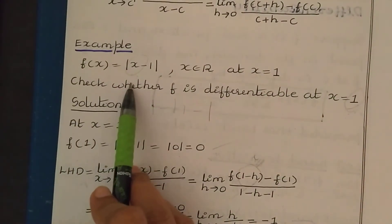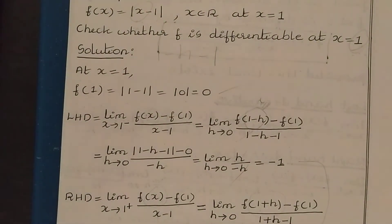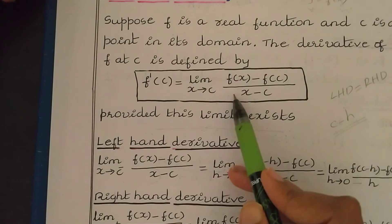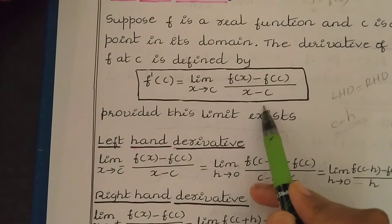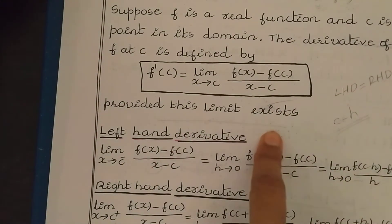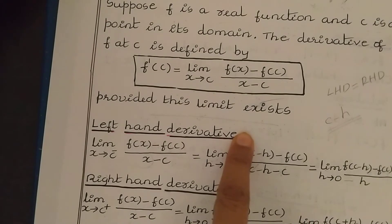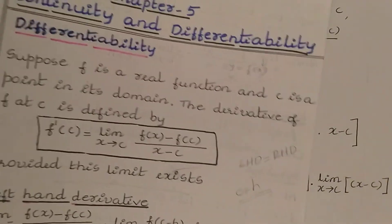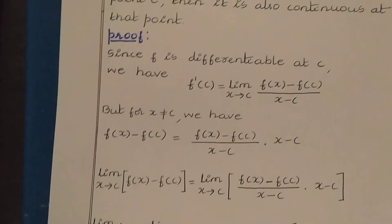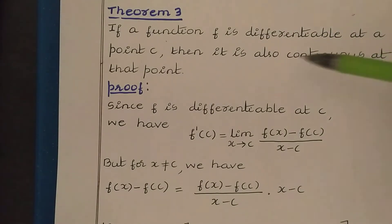This function, mod(x minus 1), is not differentiable at this point. Using the formula limit x tends to c, f(x) minus f(c) divided by x minus c, we can find the derivative of the function, but only if the limit exists — that is, if the left-hand side limit equals the right-hand side limit. This is about the differentiability of the function. Related to this, there is one theorem — Theorem 3 — given in the textbook: if a function f is differentiable at a point c, then it is also continuous at that point.